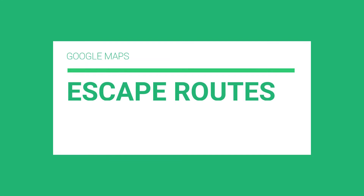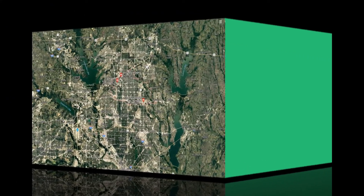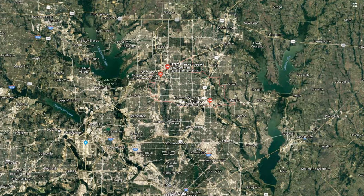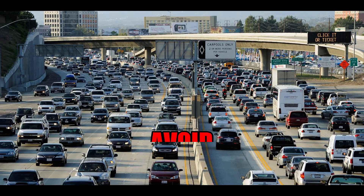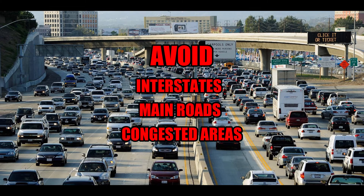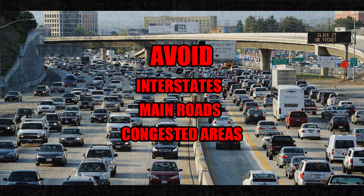Google Maps is great to use when you are planning your bug-out escape routes. From this aerial view, you can see the surrounding bodies of water that surround the city, making great places to escape to. If there is a natural disaster, consider alternate routes — avoid interstates, main roads, and congested areas.